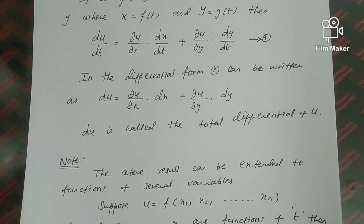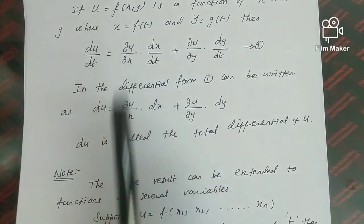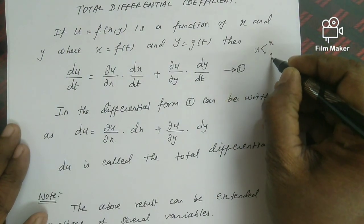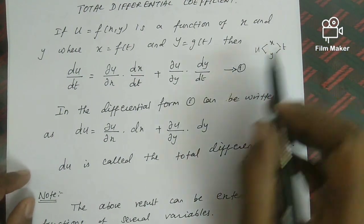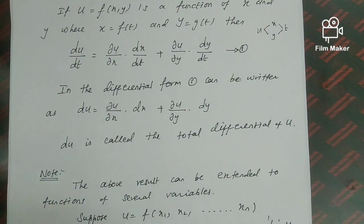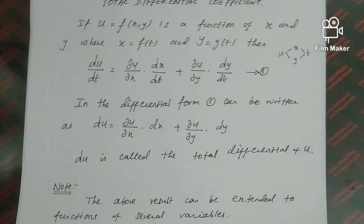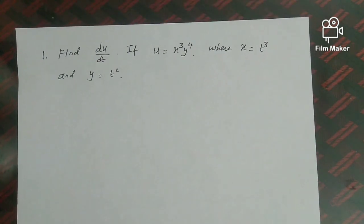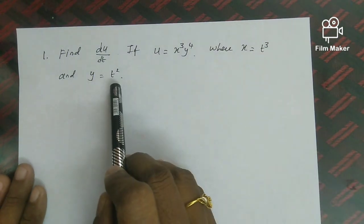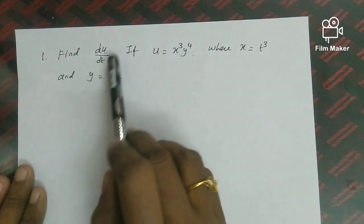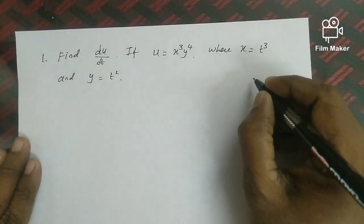So the total differential definition extends to n variables. Based on this, we will now solve the first problem. Find du by dt if u equals x cubed y to the power 4, where x equals t cubed and y equals t squared. In this question, u is a function of x and y, and x and y are functions of t, so we need to find du by dt. We apply the total differential result.